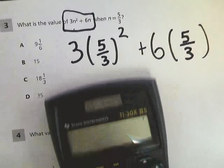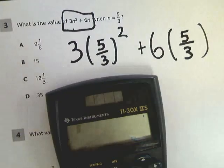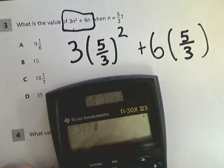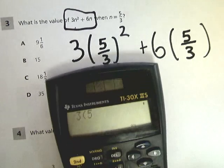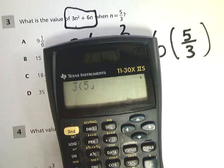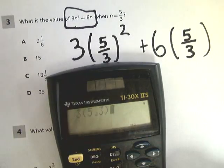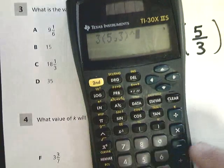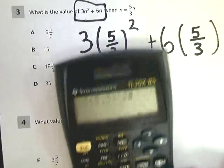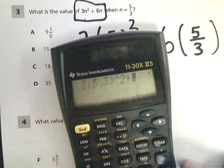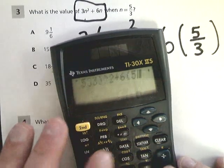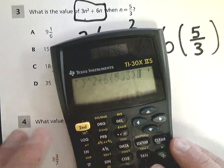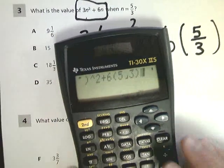Now, when we type it in, all we have to do is match that exactly. So I'm going to do 3 parentheses 5, the fraction button, which is right here if you're using the same calculator as me, 3. Then you want to use the exponent, which is this little caret here to the second power, plus 6 parentheses 5 over 3.